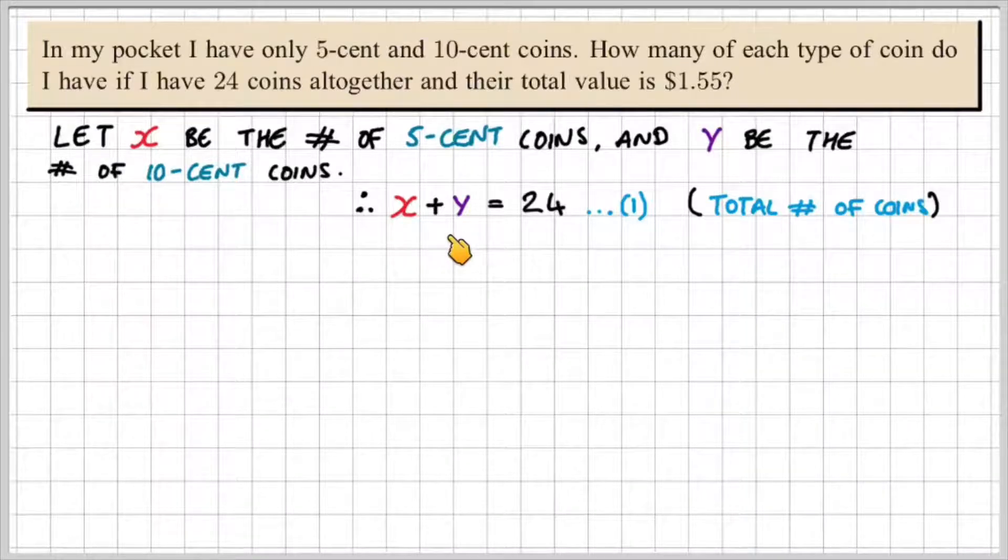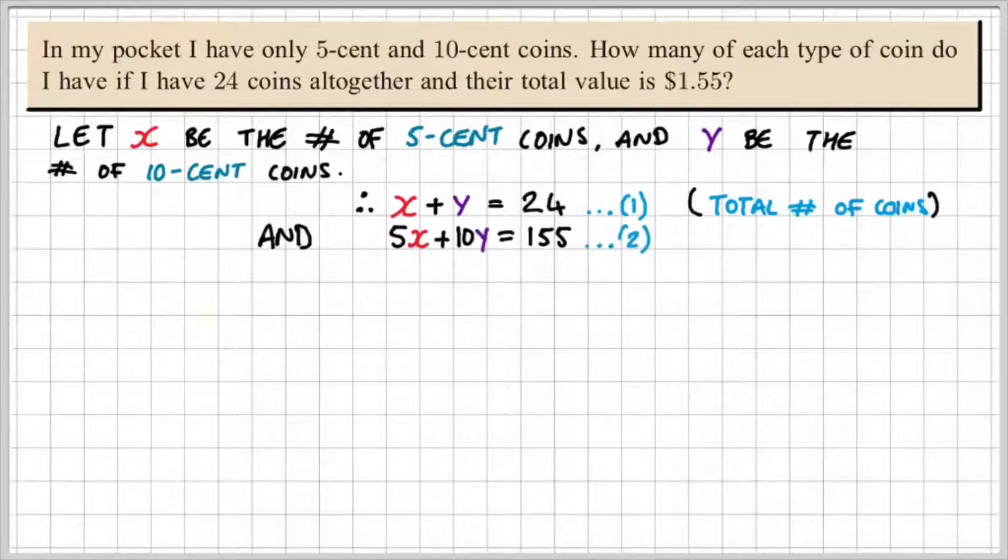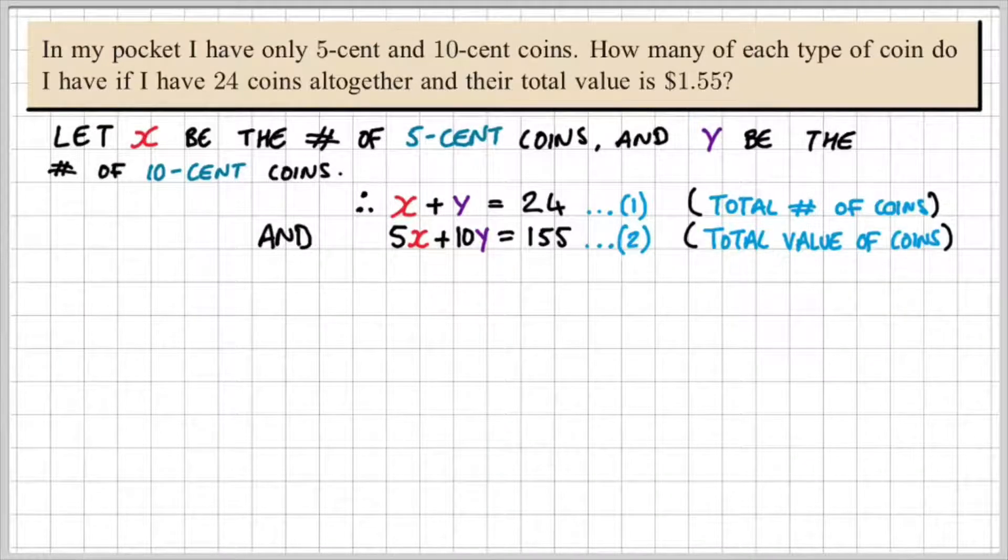Now I don't know how many 5 cent or 10 cent coins I have, but I do know that in total I have 24 coins. For our second equation, we can say 5x plus 10y is equal to 155. Now that's the total value of the coins.